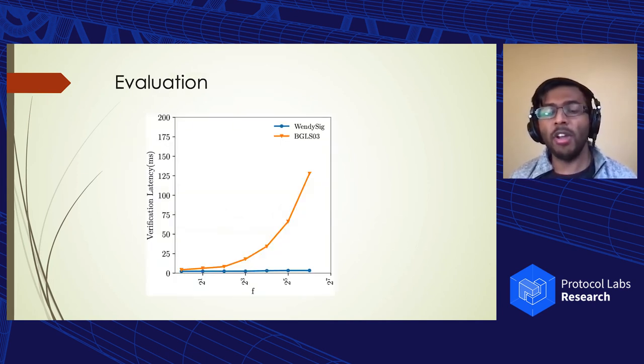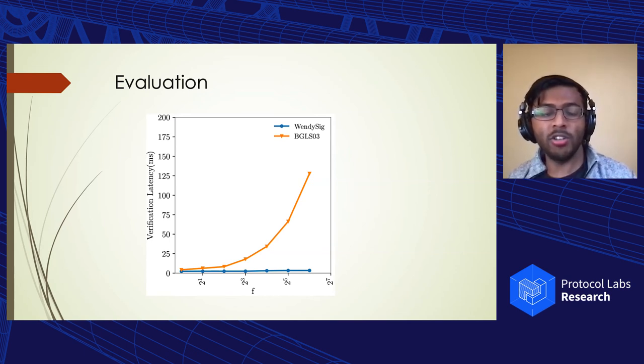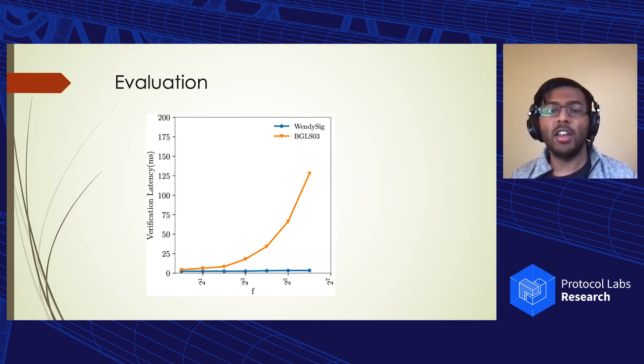So now I'm going to briefly talk about the evaluation. We compare our no-commit proof scheme with the state-of-the-art aggregate signature scheme, BGLS, which can combine signatures on different messages. From our graph here, we show that our scheme performs much better because the verification time, because we're using multi-signatures under the hood on the same message, it takes only two pairings, which is typically the bottleneck here. For higher values of F, this difference in constant versus linear pairings is much more pronounced.